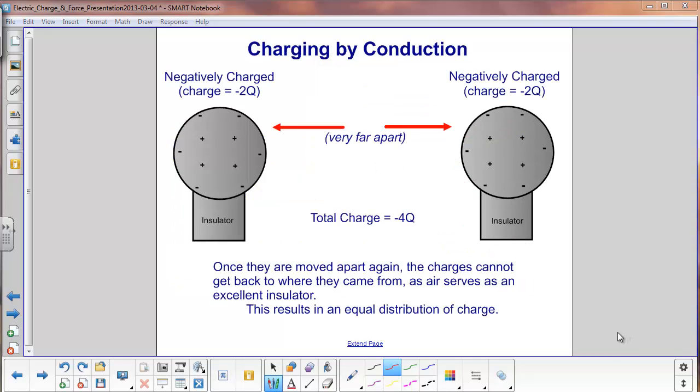The spheres are now moved apart again. The charges that moved from this sphere over to that one are now stuck. They cannot escape. They are blocked from going to the ground by the insulator, and the air between them happens to be a very good insulator.